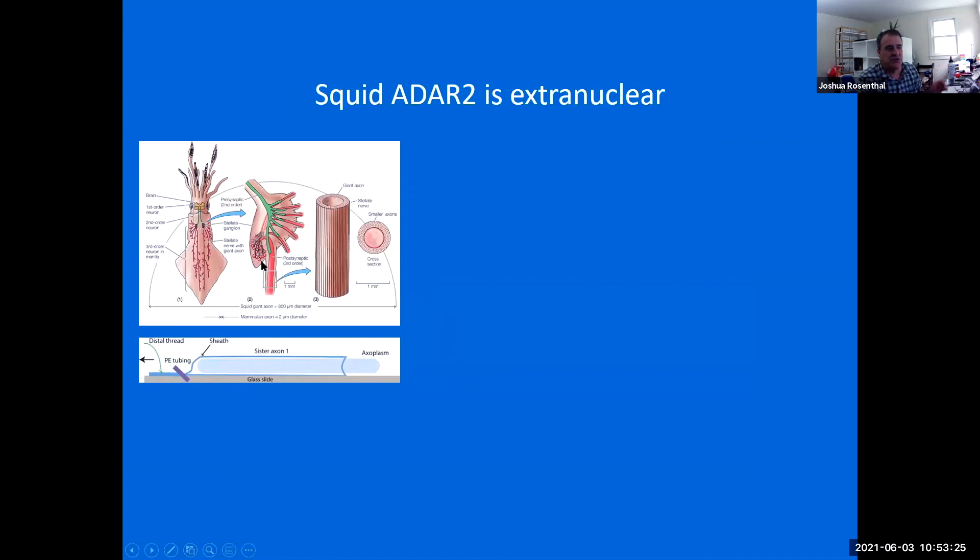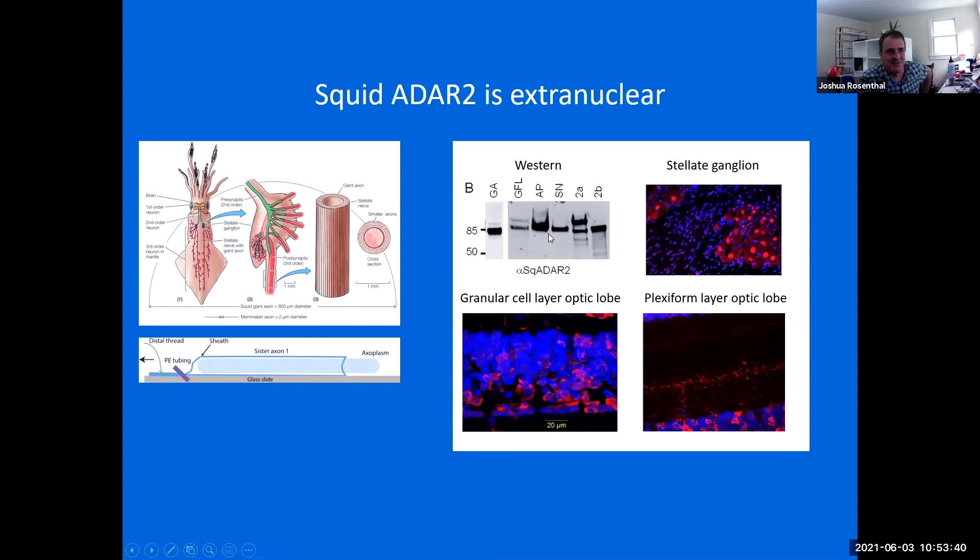but squid provide you this one neat little trick in that you can dissect out the giant axon and squeeze out axoplasm from it. This is pure cytoplasm from the axon and analyze it biochemically. When we do this, I'm starting to run out of time. We see a very nice ADAR2 signal in the axoplasm. This is the cell body as well. When we do immunostaining too, we see ADAR signal outside of the nuclei as well in various neuronal sections. We even see a bright ADAR signal in the plexiform layer, which is a layer of synaptic connections.